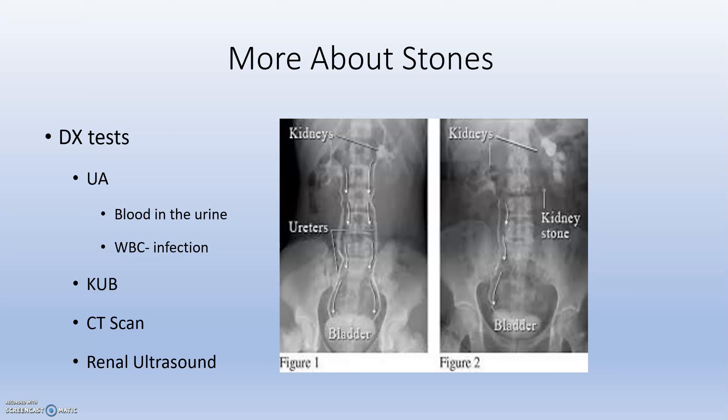Diagnostic testing for stones includes a urinalysis to check for blood in the urine and to rule out a urinary tract infection by looking at WBCs. They'll do a KUB — an x-ray of the kidneys, ureters, and bladder. They'll also look at a CT scan and a renal ultrasound to determine if there are more stones, where they are, or whether they're passing.